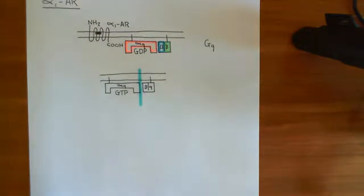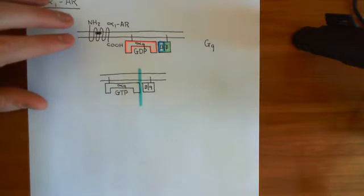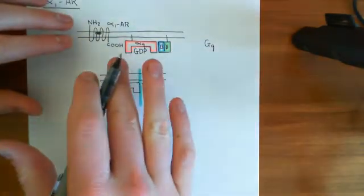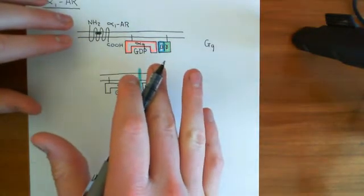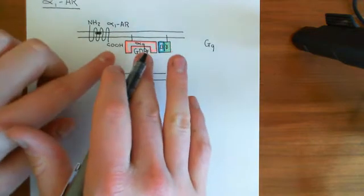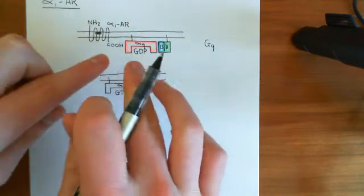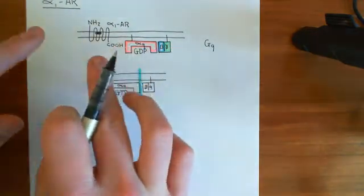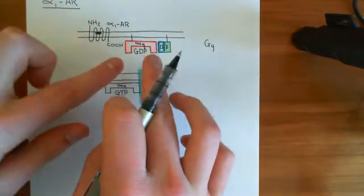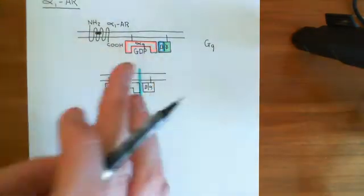The alpha-1 adrenoreceptor is specific for which heterotrimeric G-protein it interacts with — it wants to bind to the alpha-Q subunit, and can't just interact with an alpha-S alpha subunit, for instance. That's a running theme for G-protein coupled receptors: they are specific to certain alpha subunits, and will only bind to heterotrimeric G-proteins which have those certain alpha subunits.